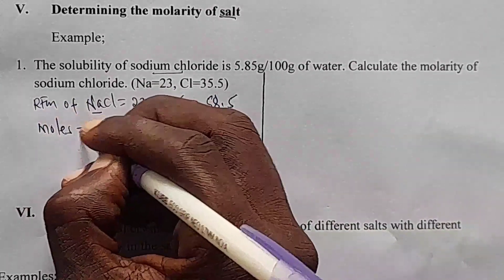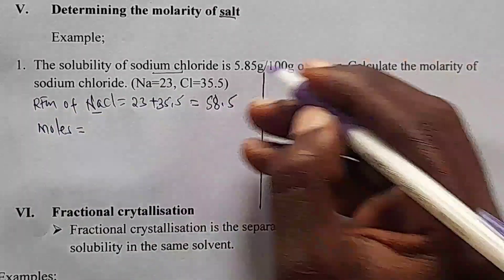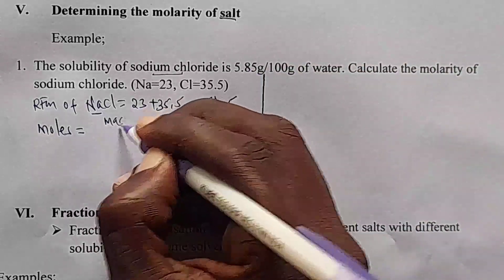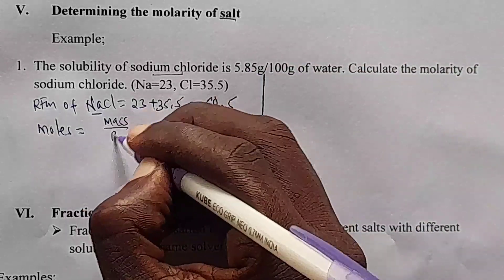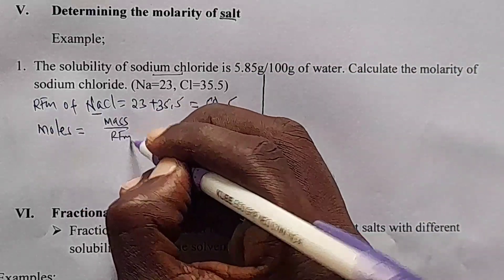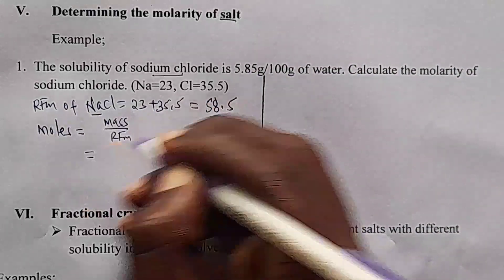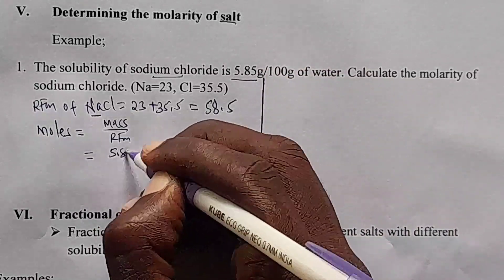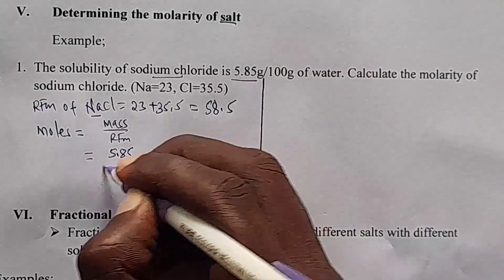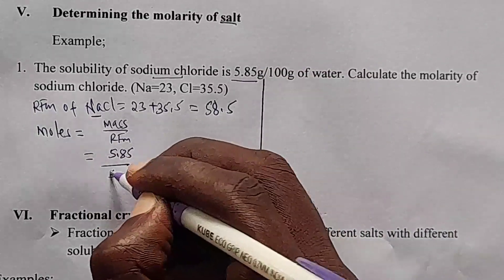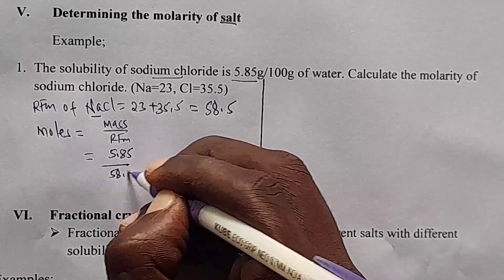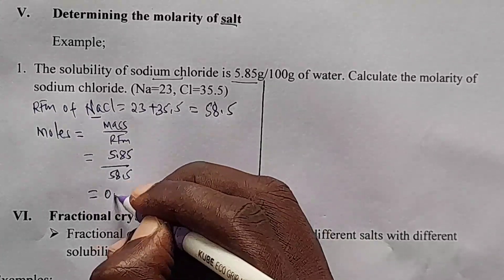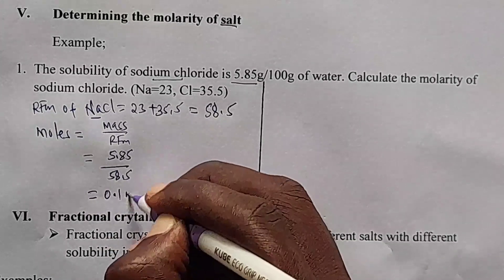Moles equals mass over molar mass (RFM). The mass is 5.85 divided by 58.5, which gives 0.1 moles.